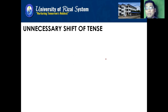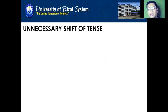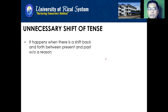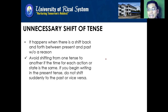Next is unnecessary shift of tense. In verbs, we have past tense, present tense, and future tense. Tense pertains to the time in which the action happens, took place, or will take place. For example, 'take' is present tense, 'took' is past tense, and 'will take' is future tense. It becomes a problem when there is a shift back and forth between present and past without a reason. If the main verb is expressing present tense, succeeding verbs should also be in present tense. Avoid shifting from one tense to another if the time for each action is the same.